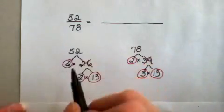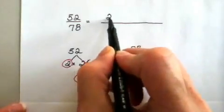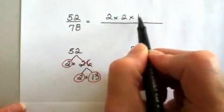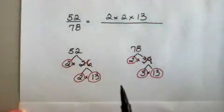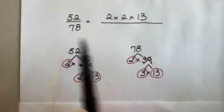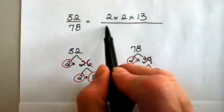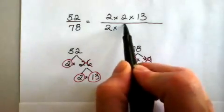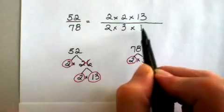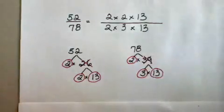52 is in the numerator, so 2 times 2 times 13 goes in the numerator. 78 is in the denominator, so 2 times 3 times 13 goes in the denominator.